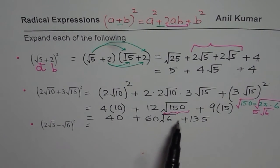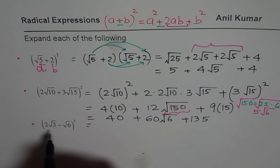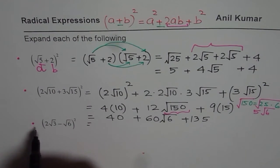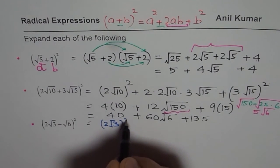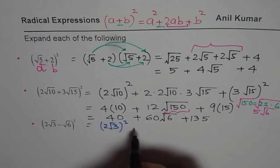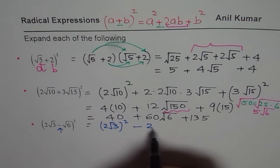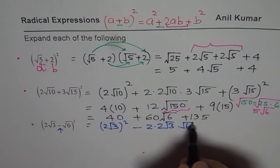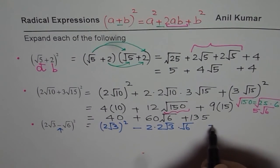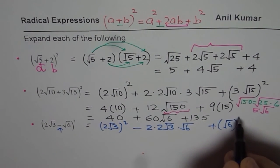Now let us do the same process for the last one: (2√3 - √6)². Square of the first term: (2√3)², minus since this is negative — minus 2 times 2√3 times √6 — plus square of the last term, which is (√6)².